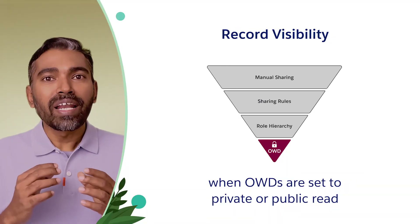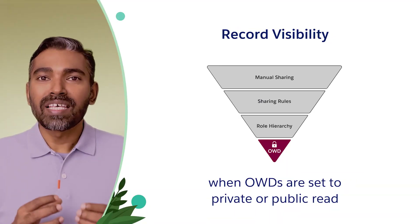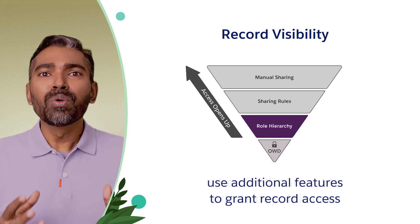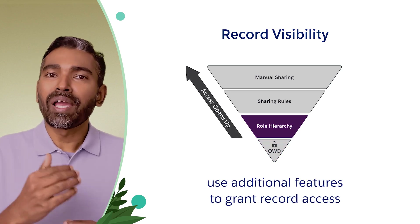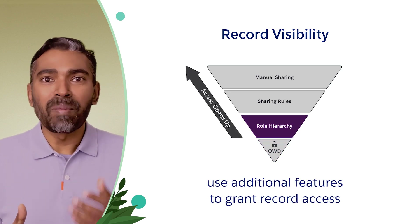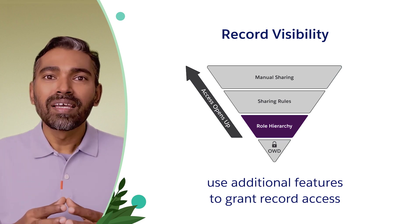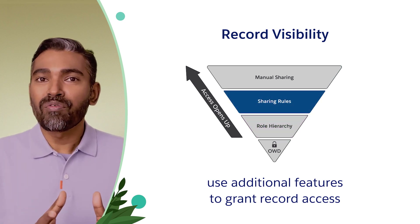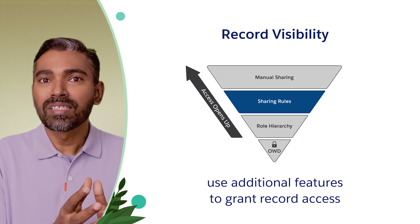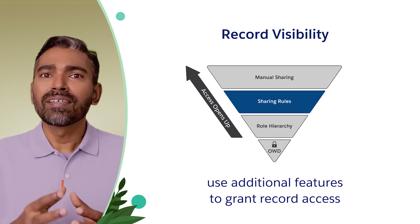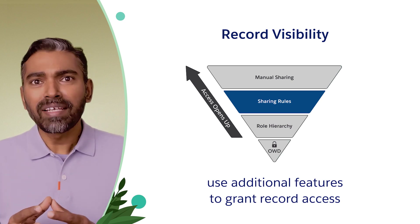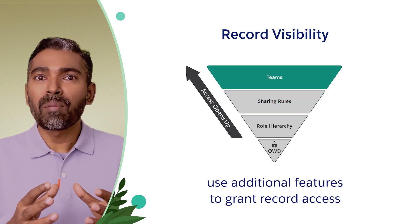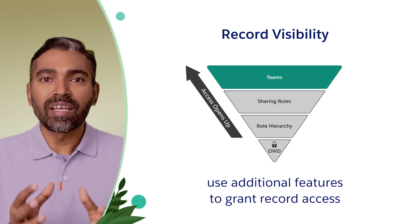When your organization-wide defaults are set to private or public read-only for objects, you use role hierarchy to open up access to managers, leaders, and VPs. You use sharing rules to share a group of records owned by users, or records based on criteria, and share them with users. Or you use teams for collaborating on certain objects.